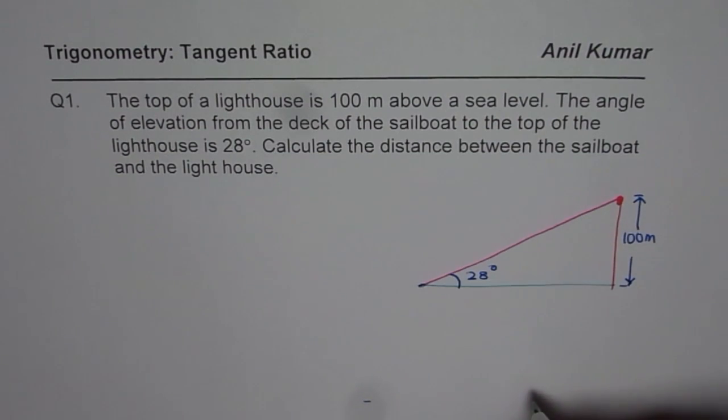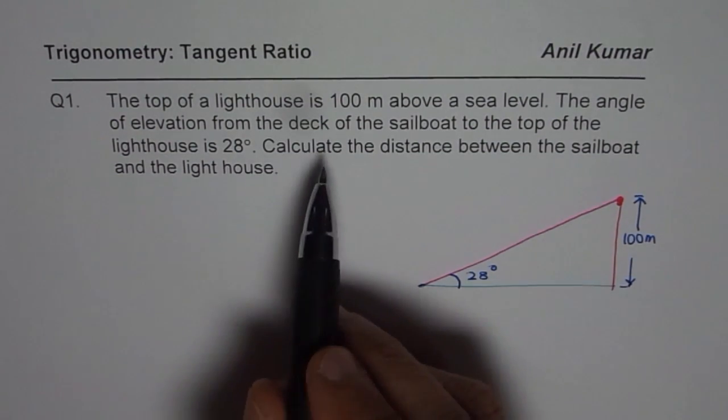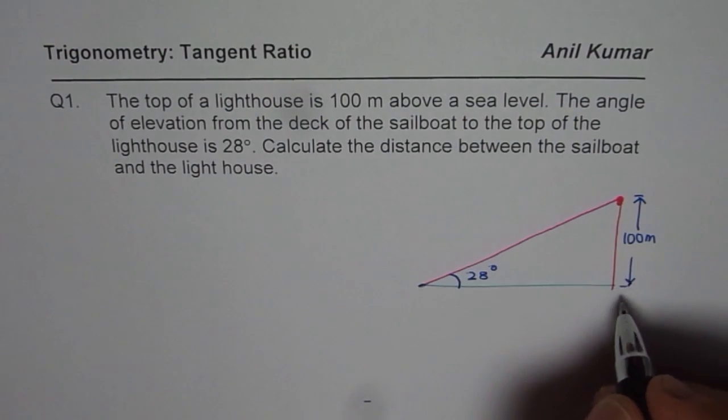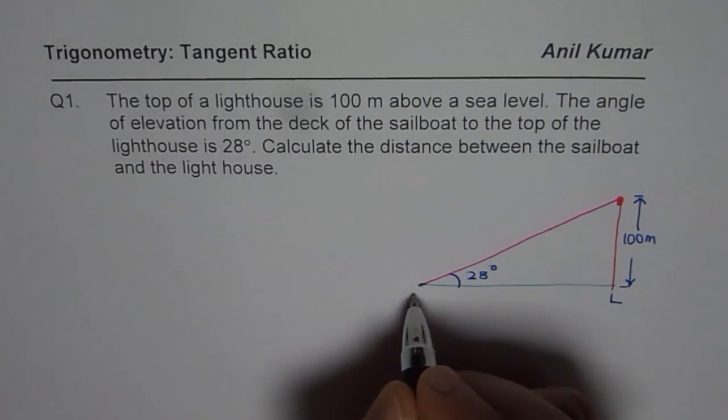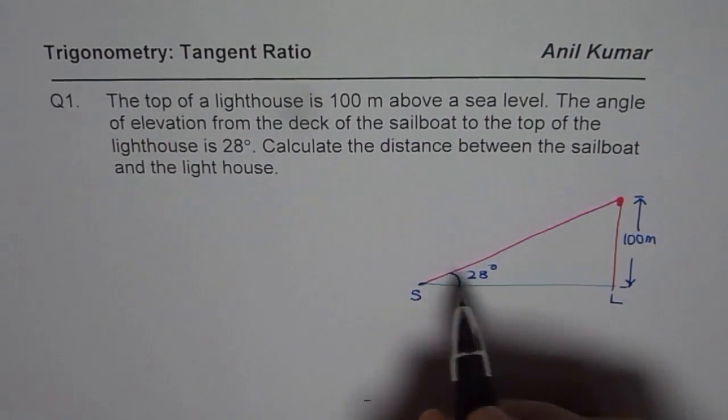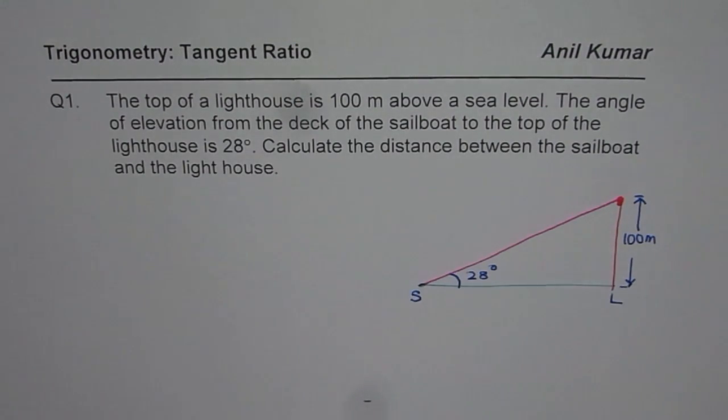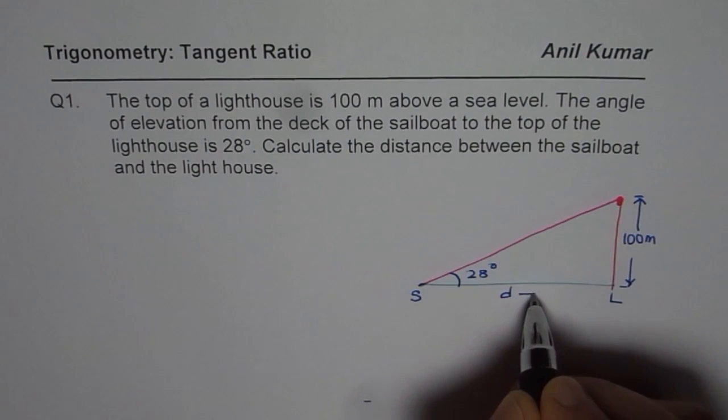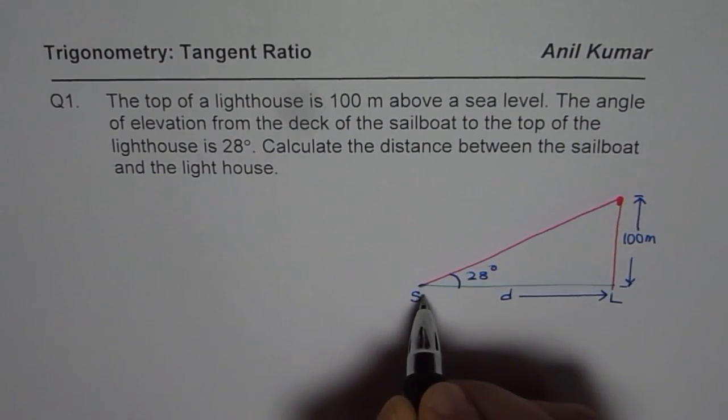And what do we need to find? We need to find the distance between the sailboat and the lighthouse. So this is the lighthouse and that is the sailboat. When we say distance, the distance which we are interested in finding is the horizontal distance. So this is the distance D which we are interested in finding.